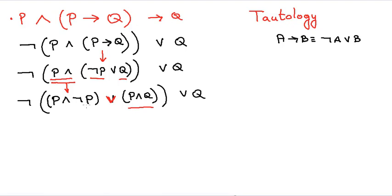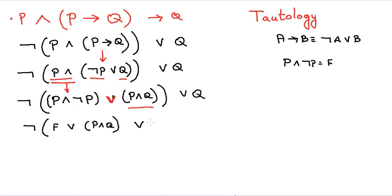We know P AND NOT P is always false. So we're going to replace that with false: false OR P AND Q OR Q. And false OR any proposition is always that proposition — it depends upon it. So we're going to remove that false altogether.